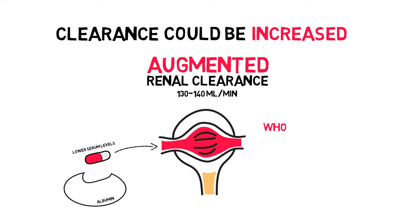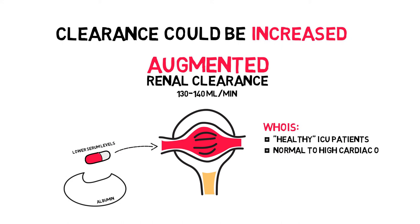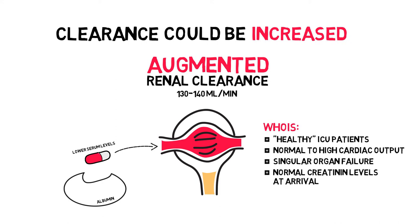Now who are these patients with augmented renal clearance? They are the younger, fairly healthy ICU patients with normal to high cardiac outputs, singular organ failure, that arrive at the ICU with normal serum creatinine levels. As increased clearance leads to lower serum levels, this would imply that you would need to increase the maintenance dose in these patients.